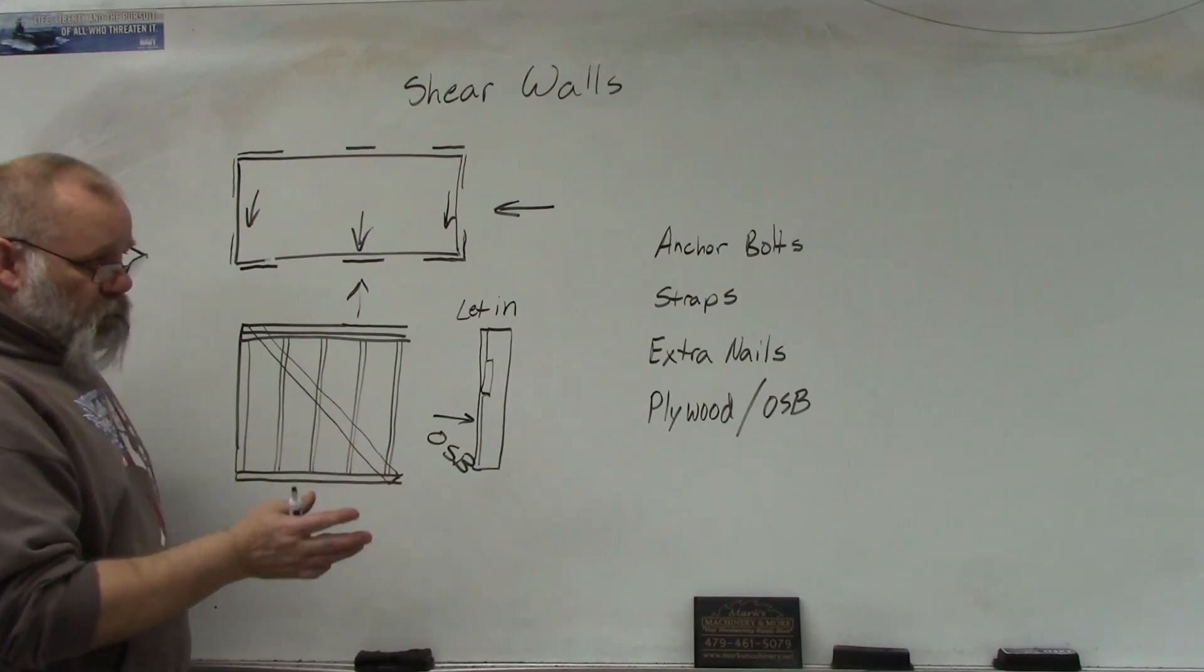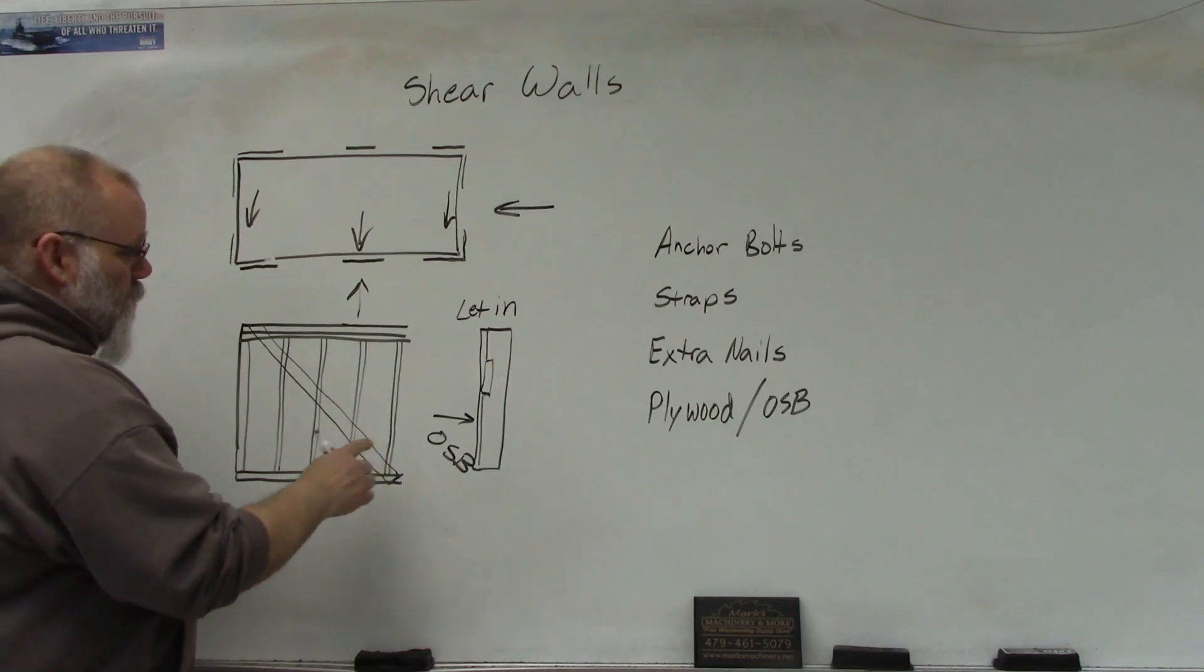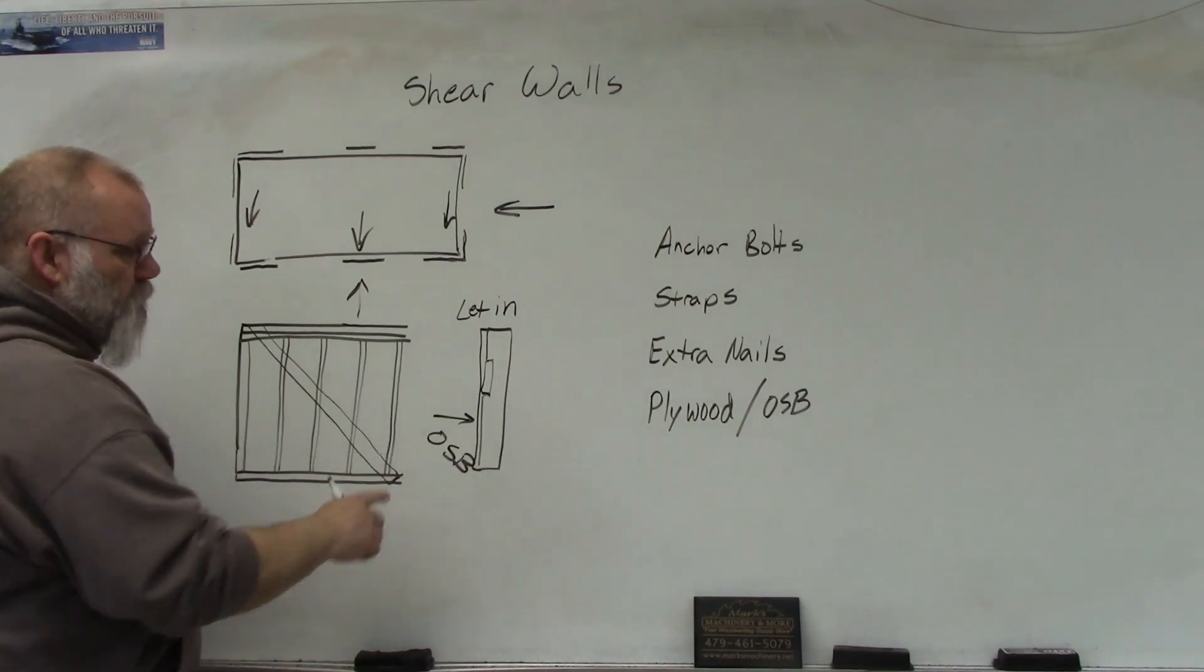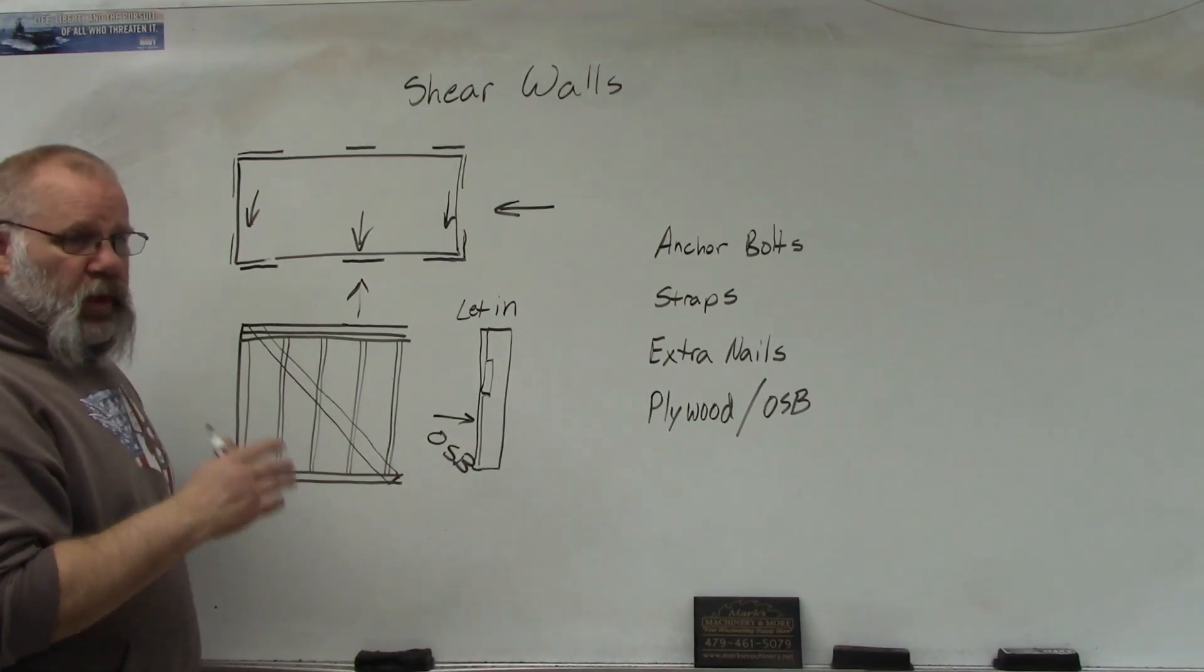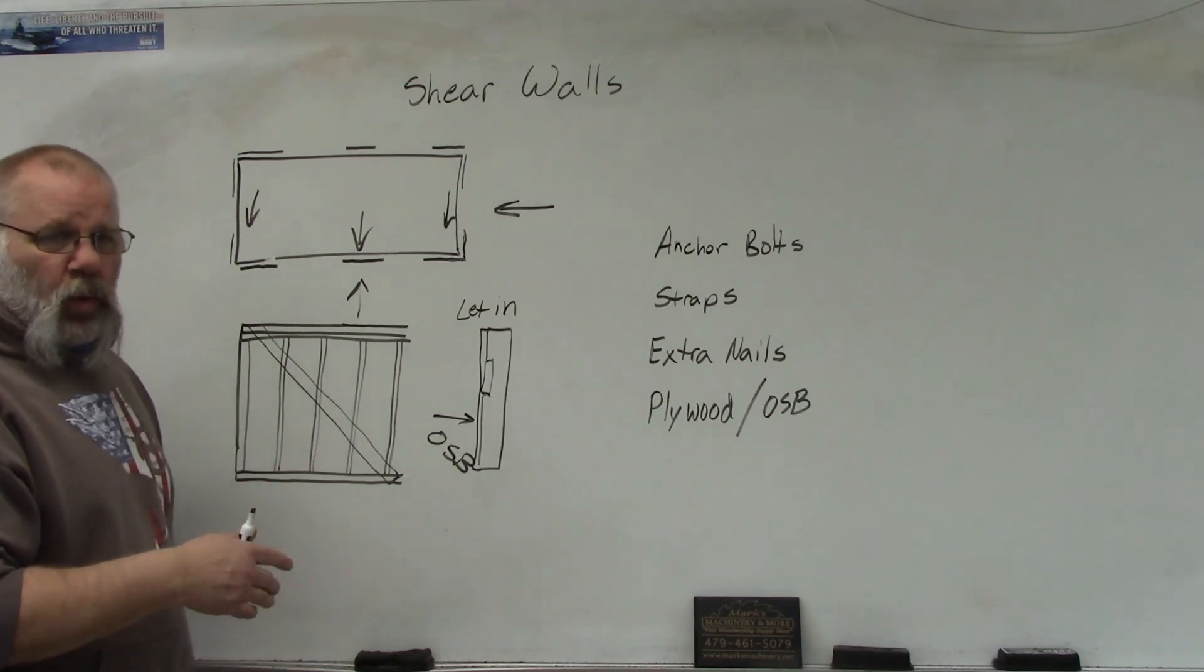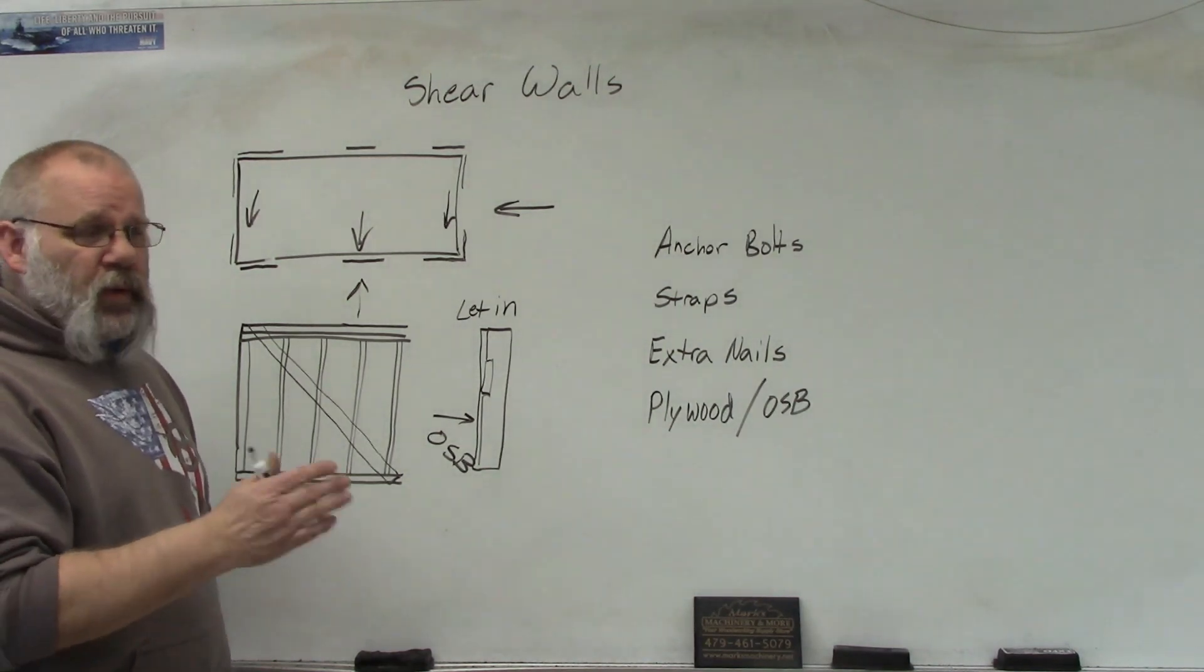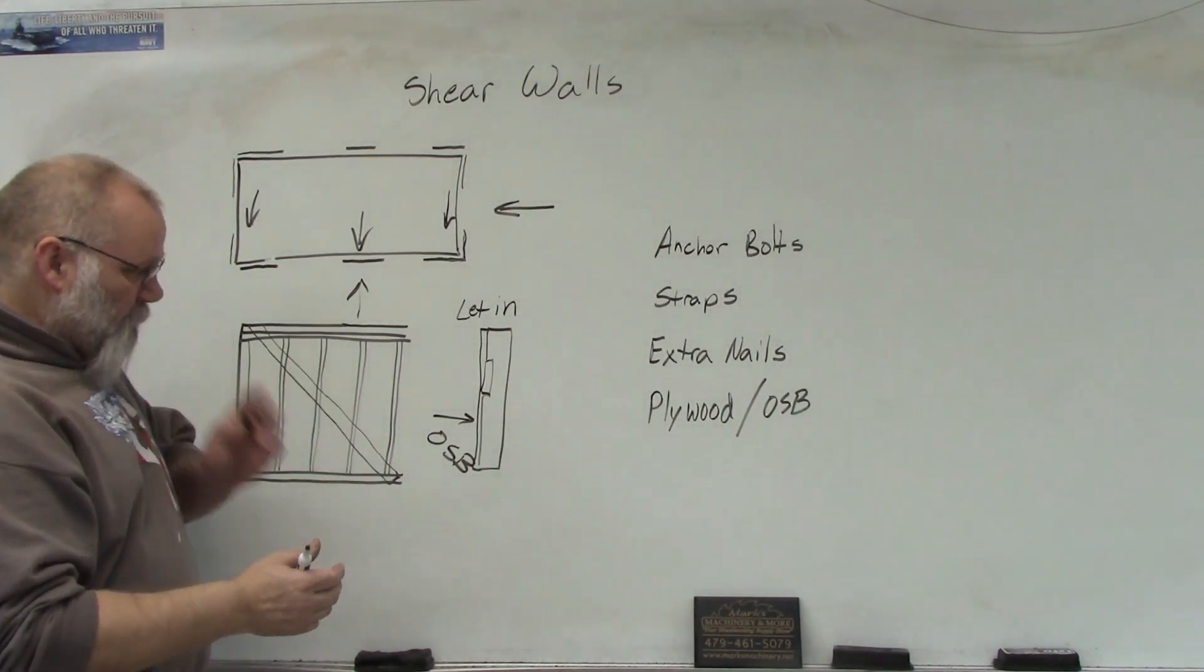And back in the early 80s when I was first starting to build houses, we would put the OSB on the corners but then we would sheet the rest of it with something else, some type of insulating board, some polystyrene insulation, something else would go on the rest of the studs.